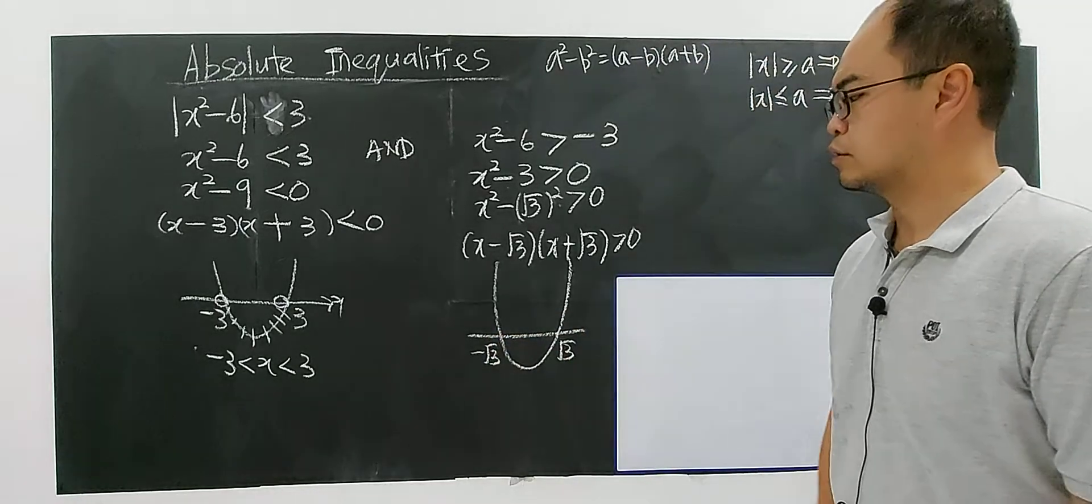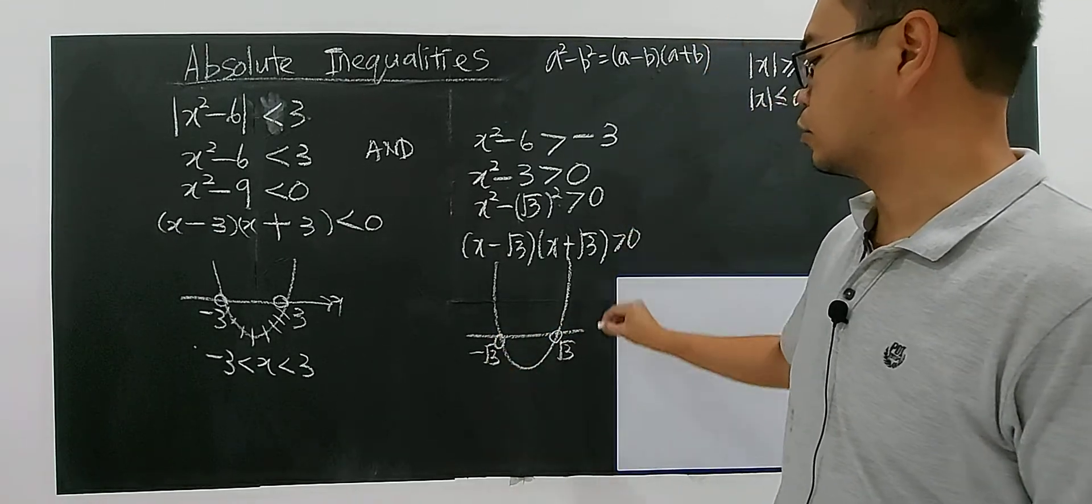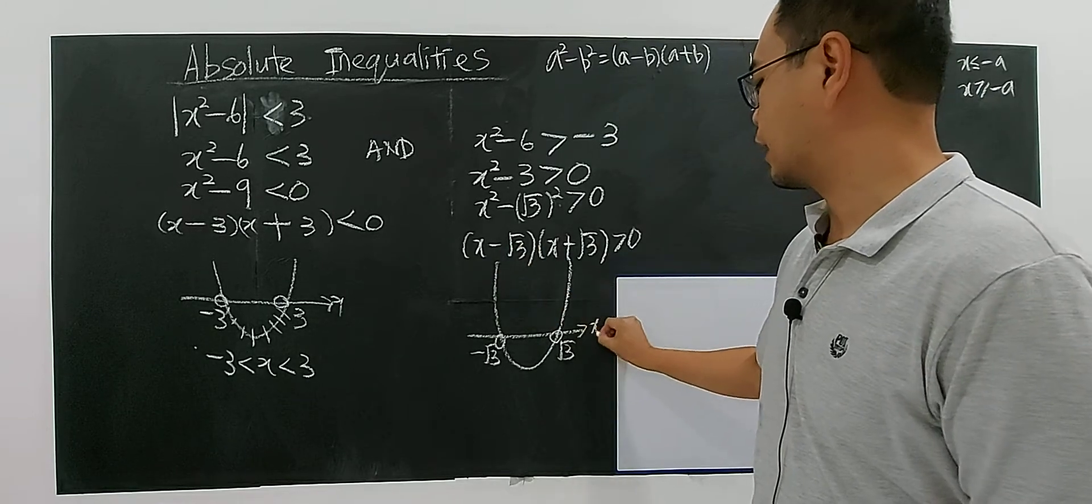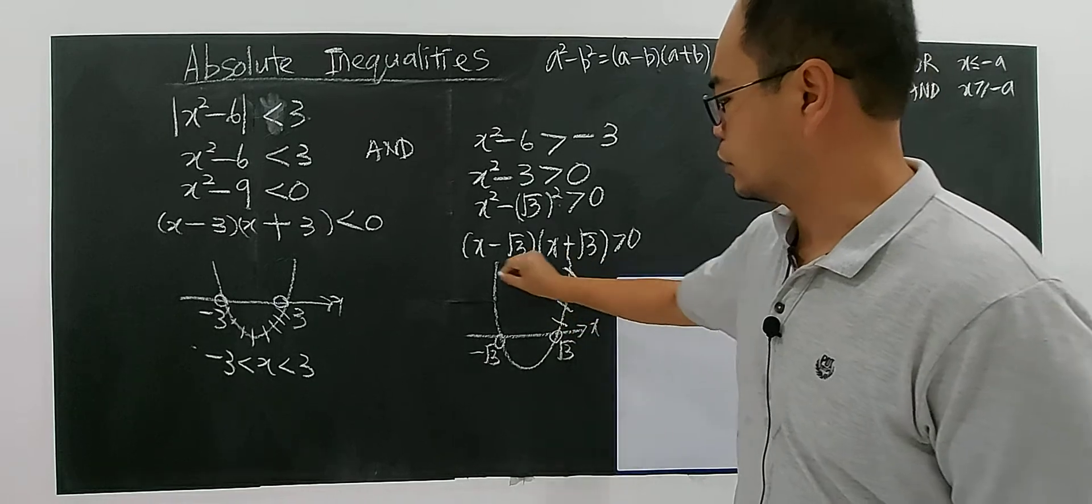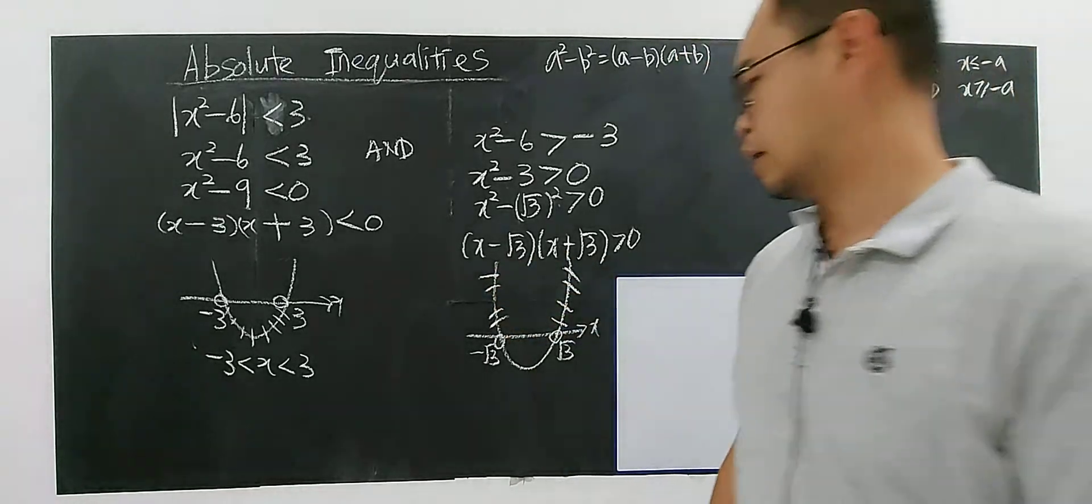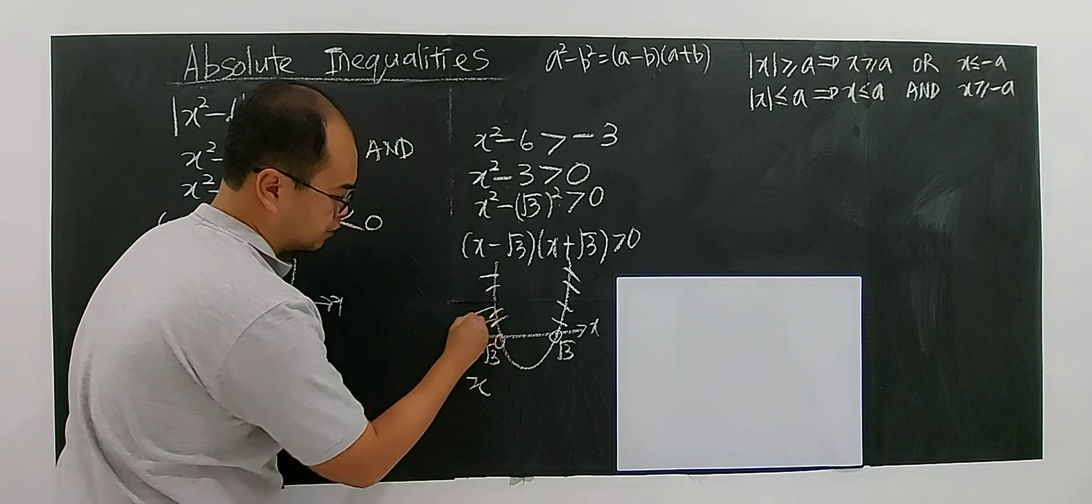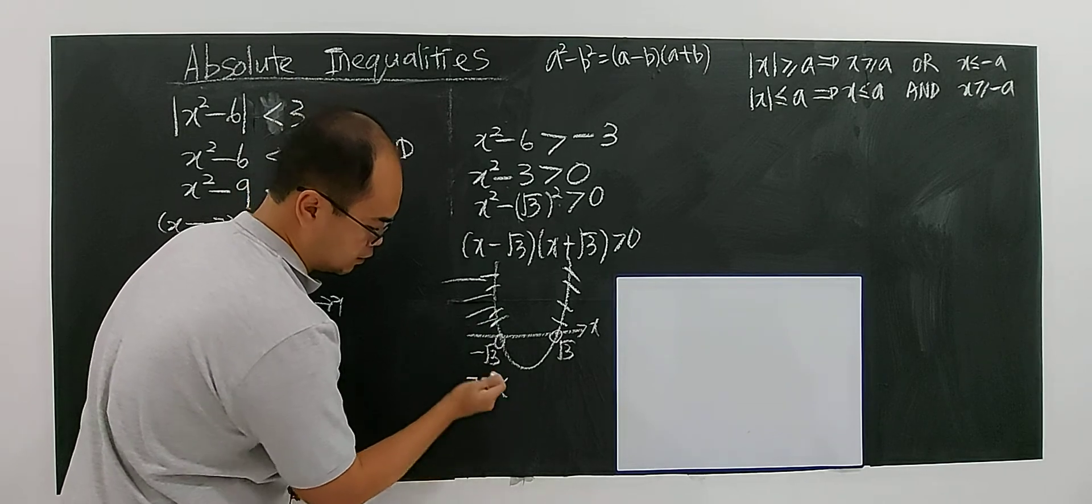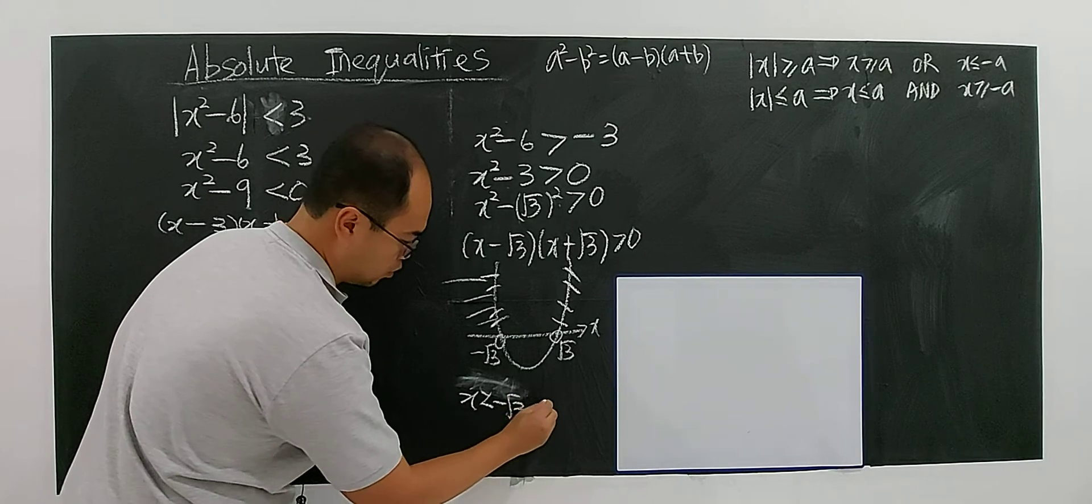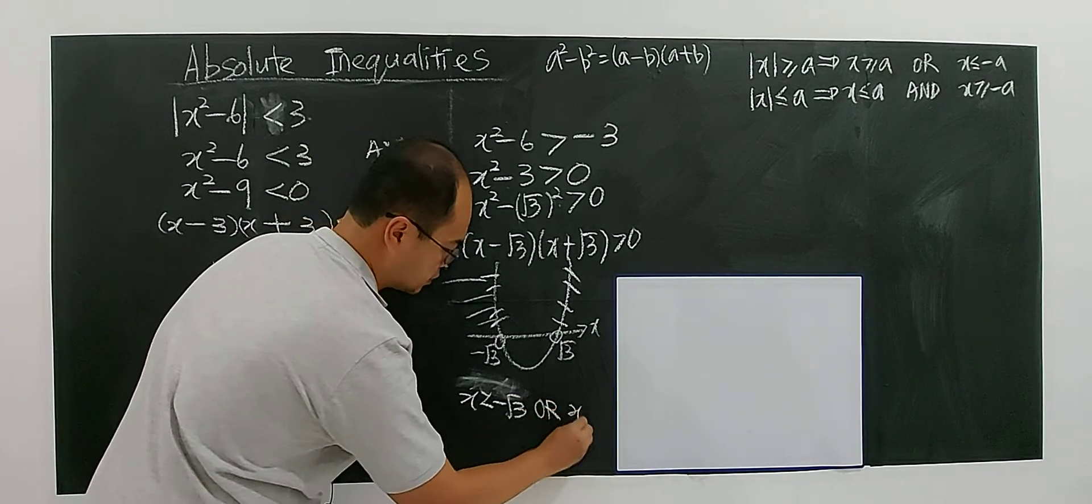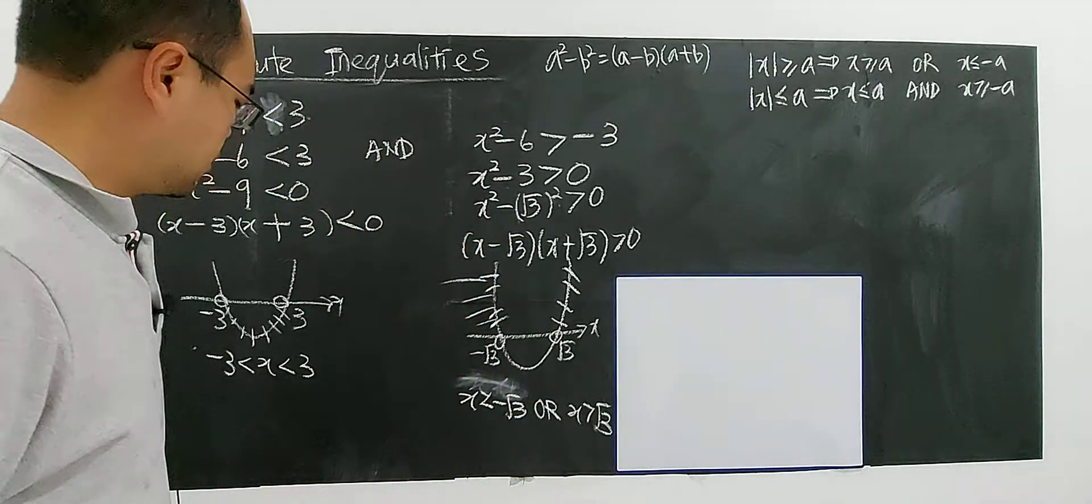So you have negative square root of 3 and square root of 3. So greater than zero, greater than zero is the curve above the x-axis. This is below if negative, if above this will be the region. So then you have x less than, this is a region, where x less than negative square root of 3 or x greater than square root of 3. This will be the solution for this quadratic inequality.